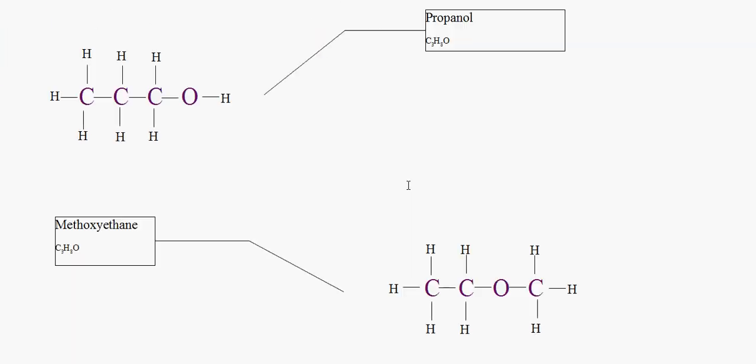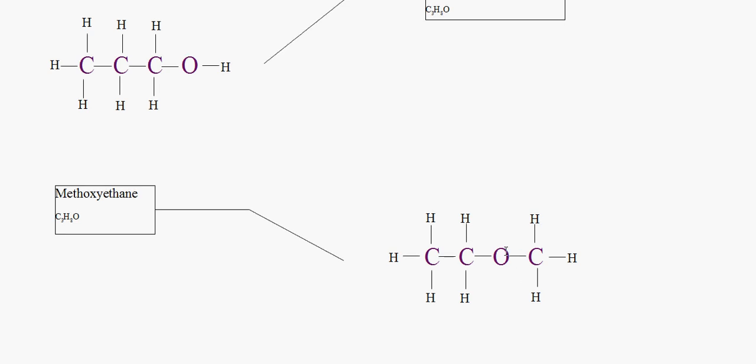So if you notice, the oxygen here is located at the end of the chain, and here it's located in the middle, where the third carbon would be. This is actually called an ether, which I will explain in later tutorials.